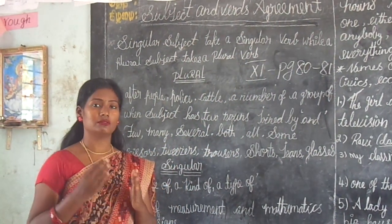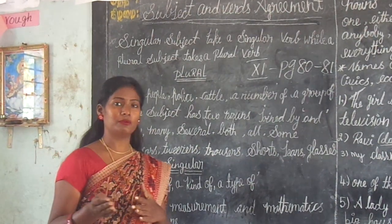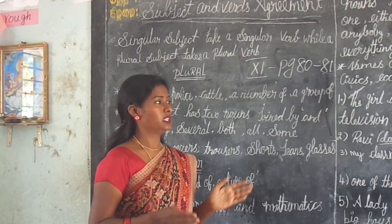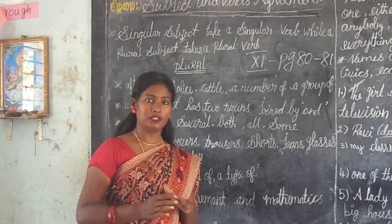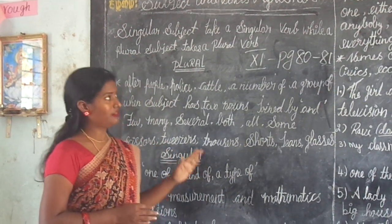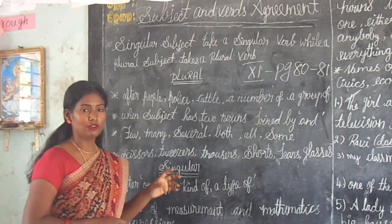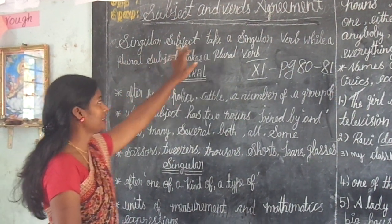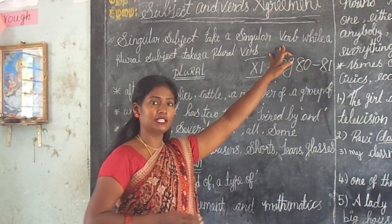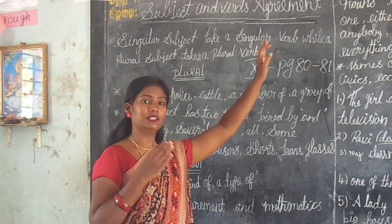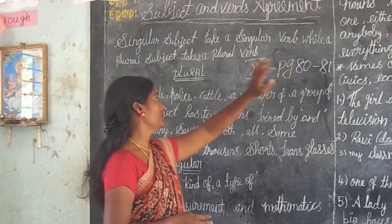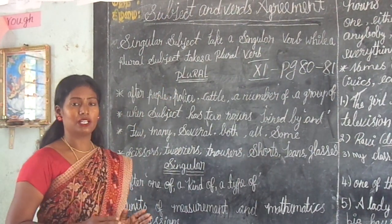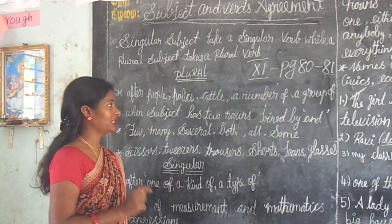A singular subject takes a singular verb, while a plural subject takes a plural verb. That is the rule of concord — subject-verb agreement.